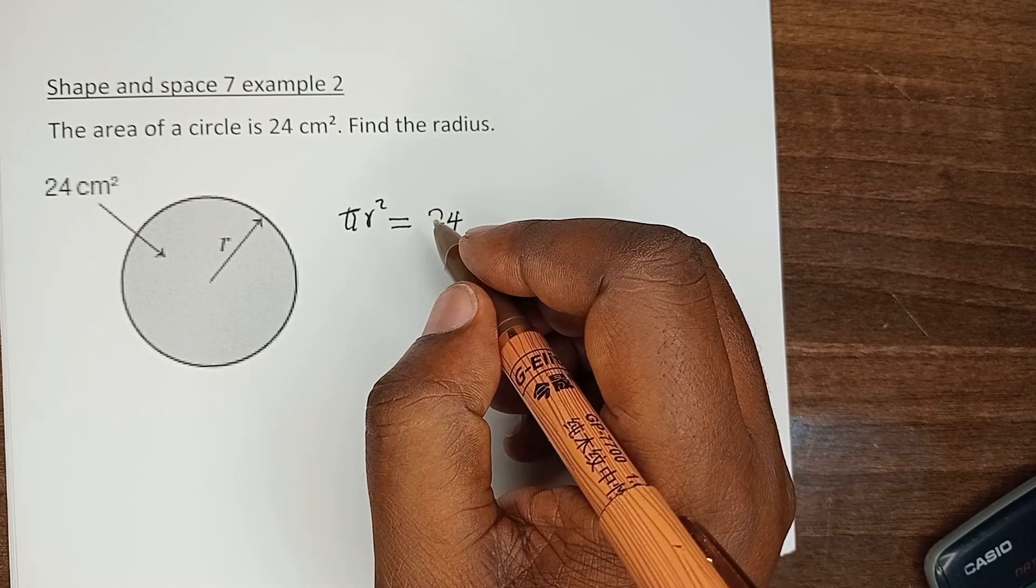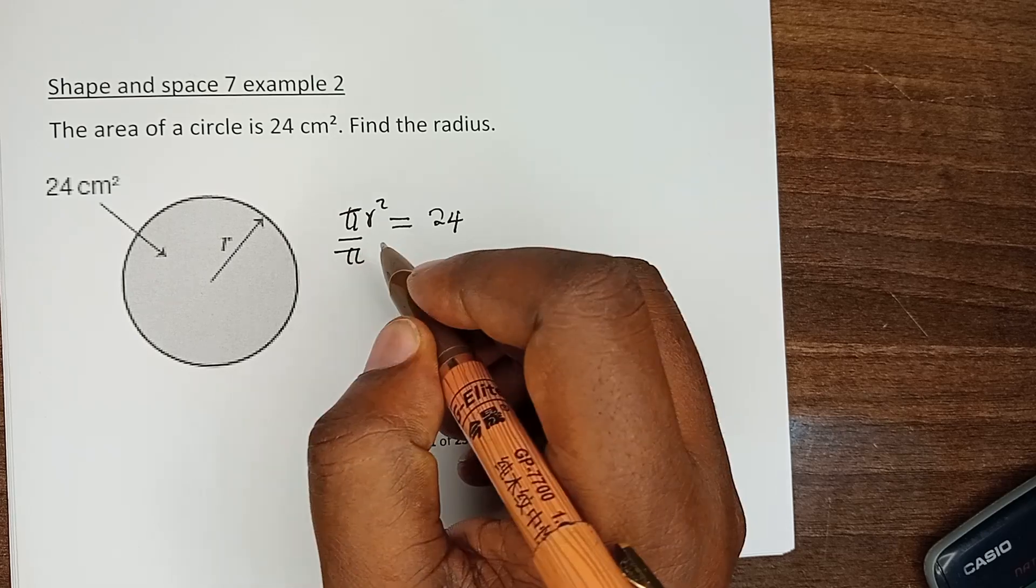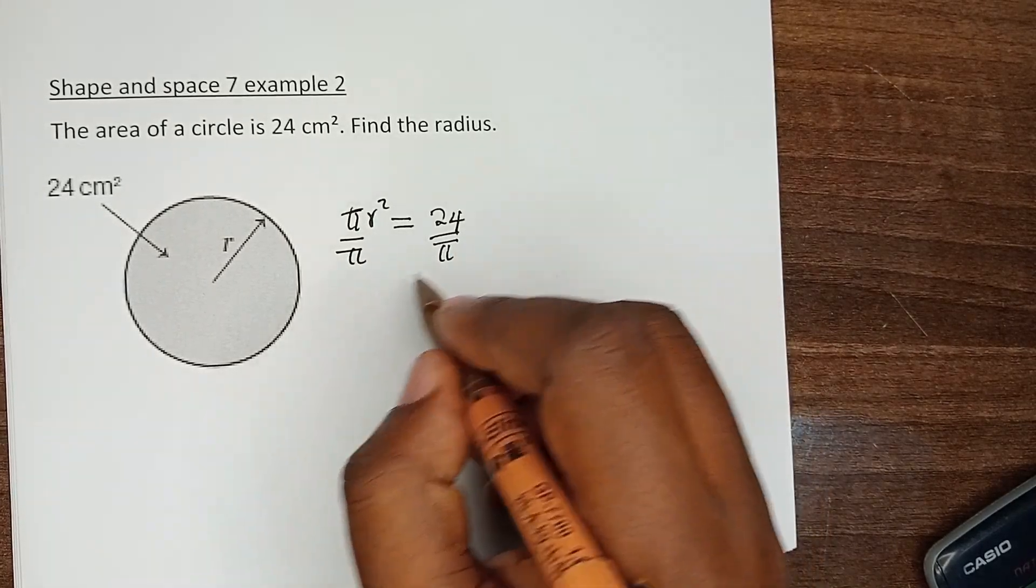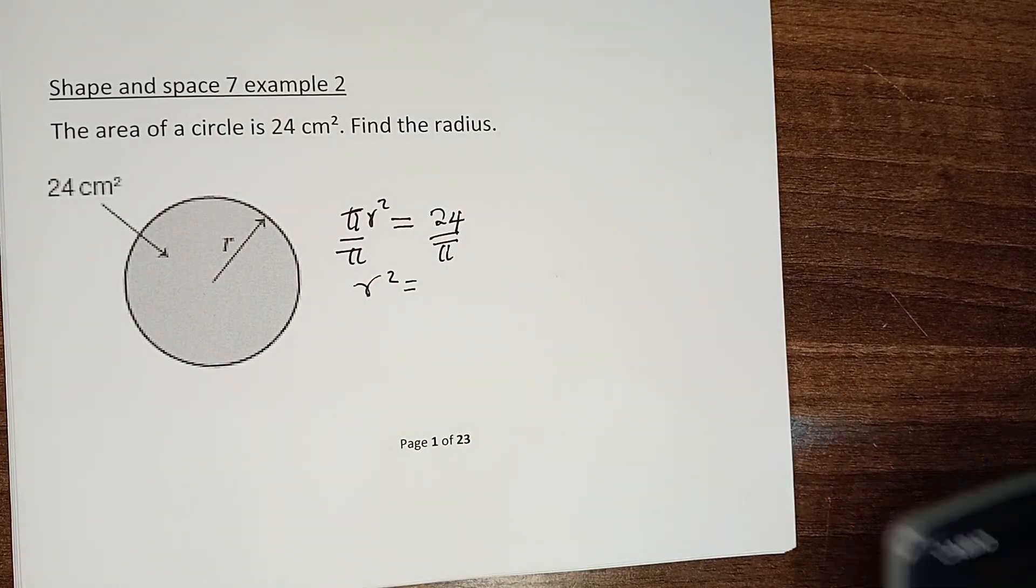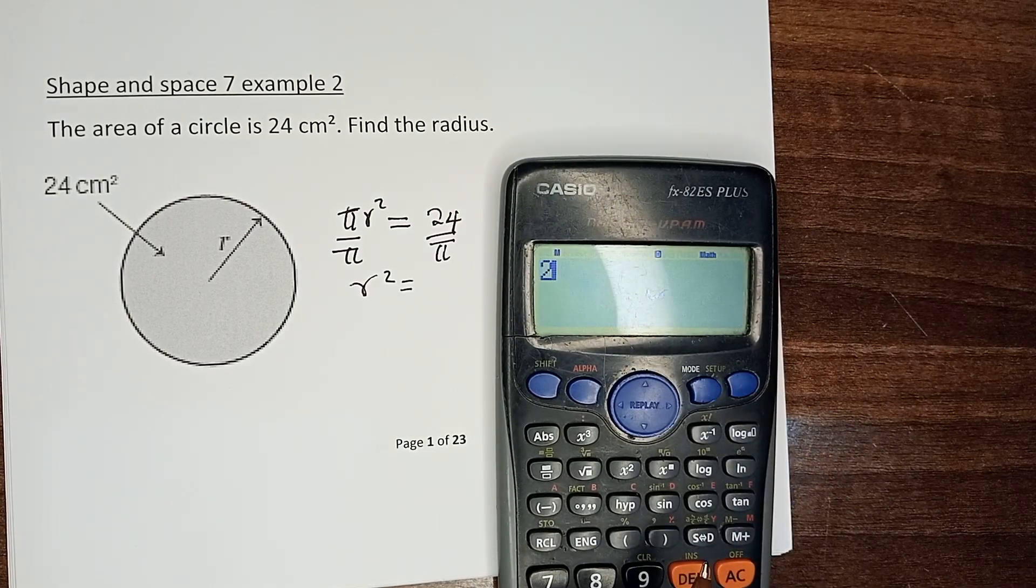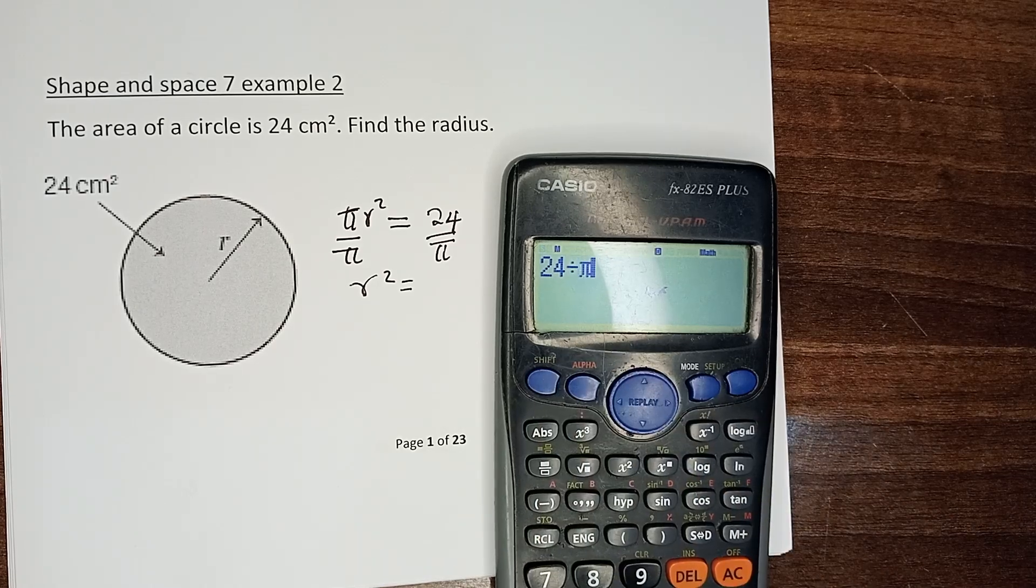If you want to make r the subject of the formula, we have to divide by π on both sides. And we can already see r² equals - let us have 24 divided by π - which gives us 7.64.